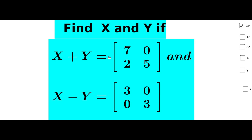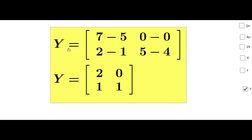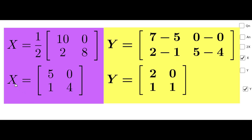From the given equation X+Y = [7, 0; 2, 5], we find Y = [7, 0; 2, 5] minus X. Since X = [5, 0; 1, 4], subtracting: Y = [7-5, 0-0; 2-1, 5-4] = [2, 0; 1, 1]. Thus we have obtained X = [5, 0; 1, 4] and Y = [2, 0; 1, 1]. Thank you.